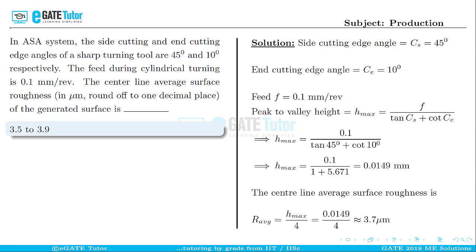When we convert that into micrometers, we get approximately 3.7 μm as the centerline average surface roughness.